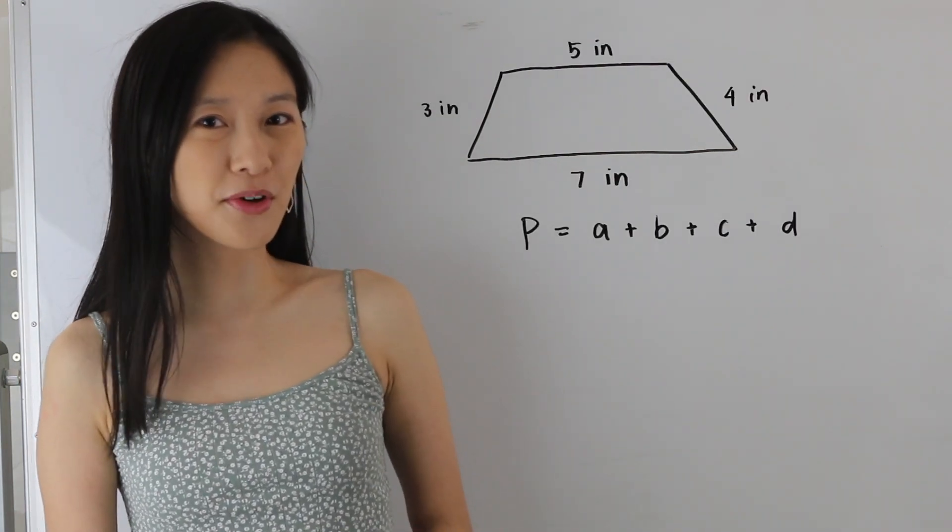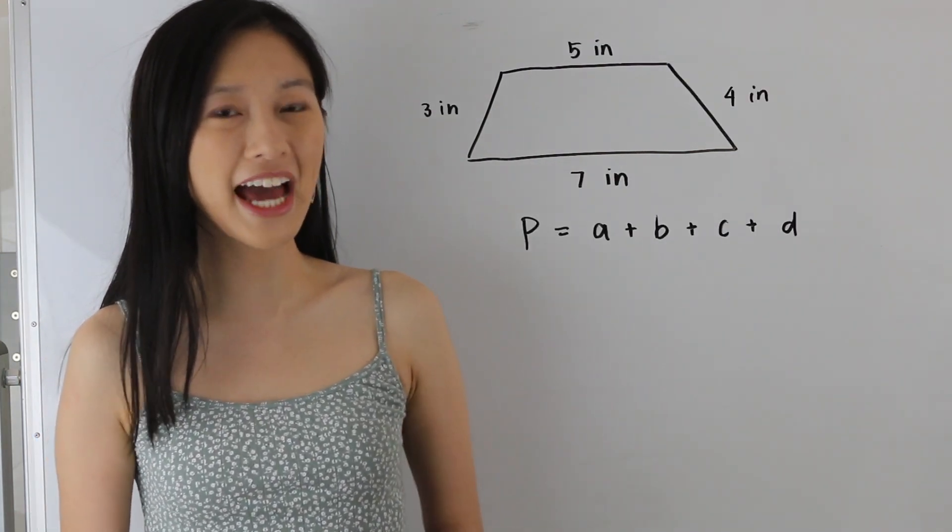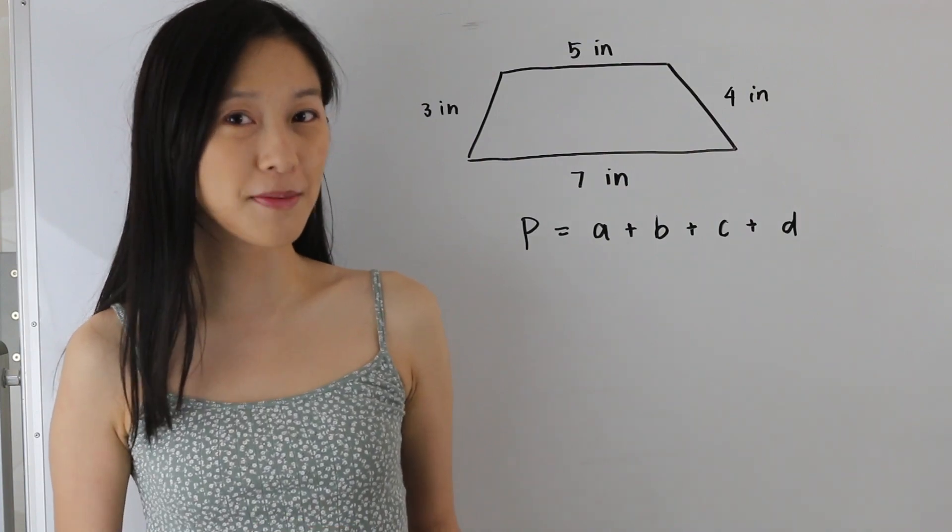So here as in the previous example we're going to go ahead and apply our formula and add up all the sides of our trapezoid.